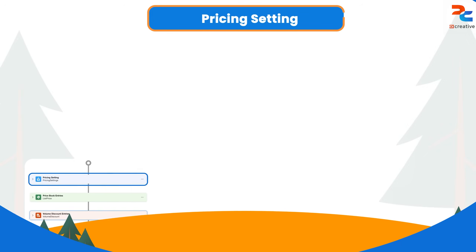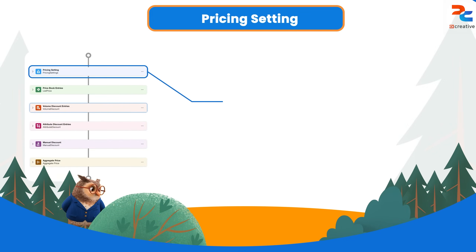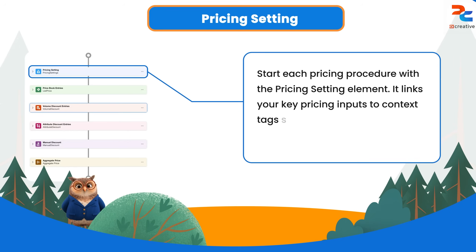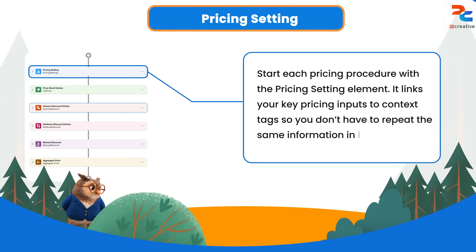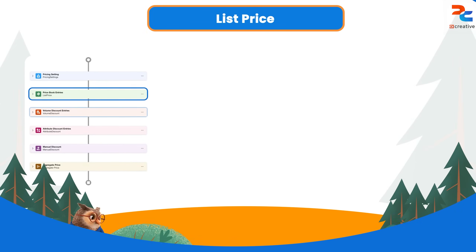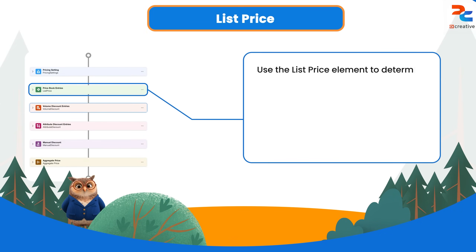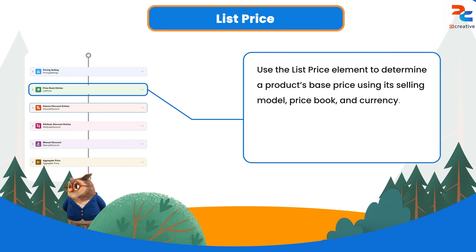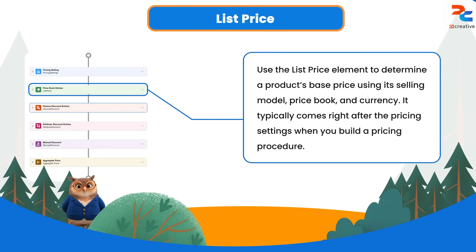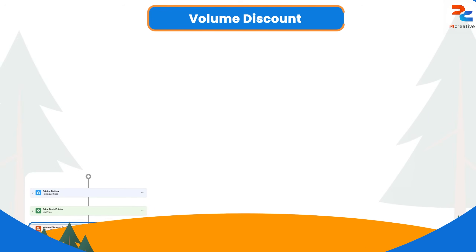The first element is the pricing setting. Every pricing procedure starts with the pricing setting element, which maps common pricing variables to the context tags defined in the context definition. The second element is the list price, used to calculate the price based on the product's selling model, price book, and currency. It's usually the second element when building the pricing procedure.